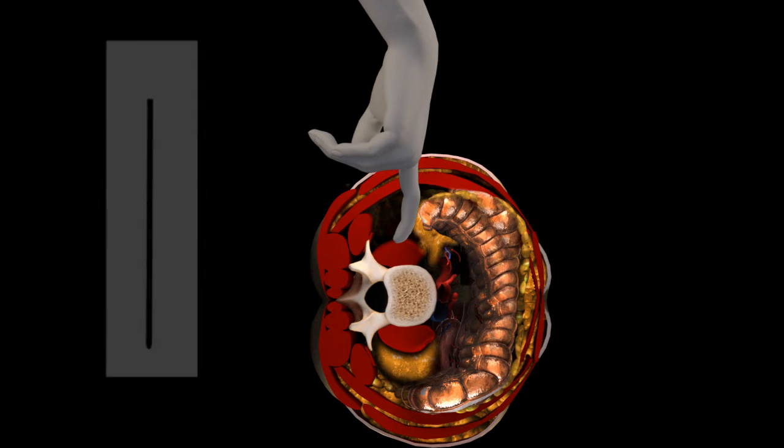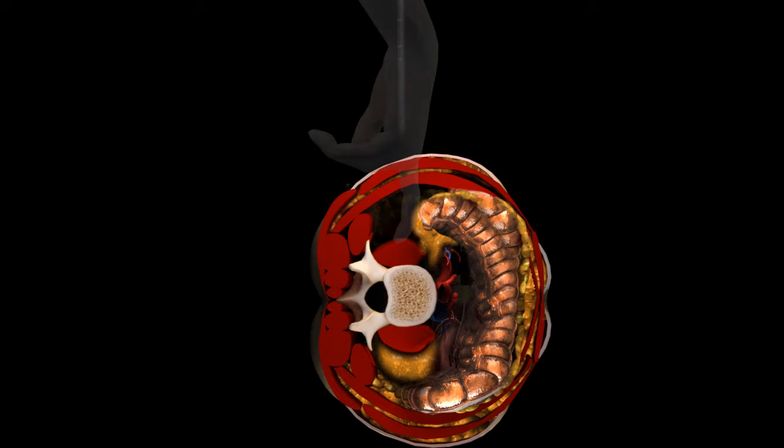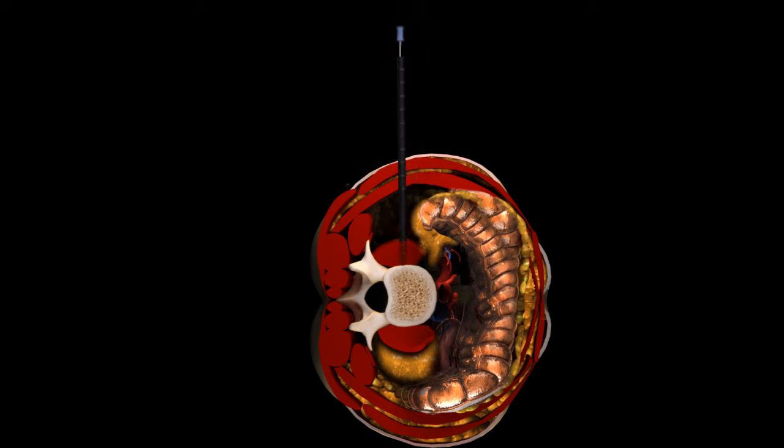If neural monitoring will be employed, the scrub technician will load each dilator with a monopolar stimulator probe. Guide the initial dilator down to the psoas muscle while protecting the peritoneum. Carefully advance the initial dilator through the psoas muscle until it rests on the disc of the level to be fused. A rotating motion with downward pressure will help to ensure the dilator adequately passes through the psoas muscle.